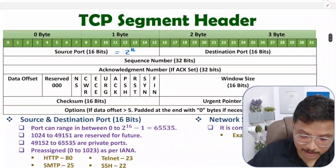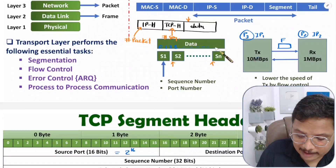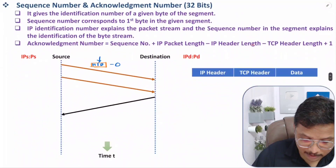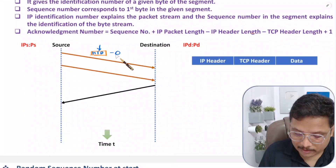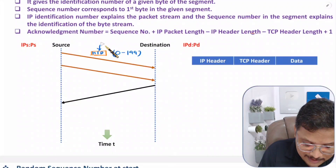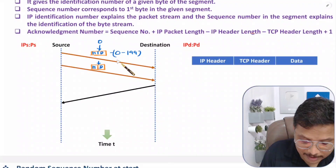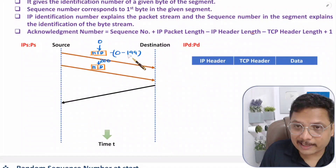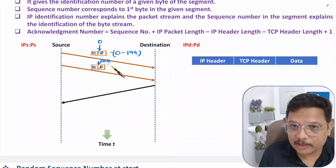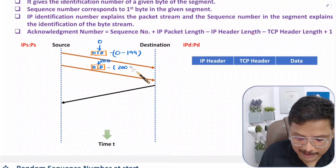In the complete data, let's say we have bytes zero to 1024. The first segment forwards bytes 0 to 199 — 200 bytes — so sequence number is zero. For the next segment, which also has a header and data, the sequence number should be 200, because data up to 199 has already been forwarded. So from 200 onwards, data goes up to 399 in the second segment.